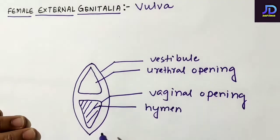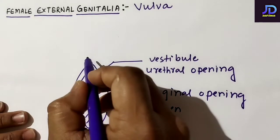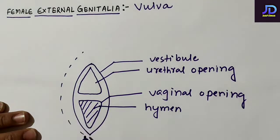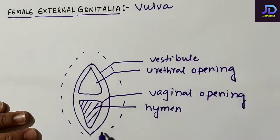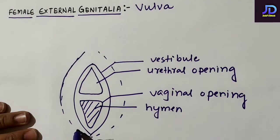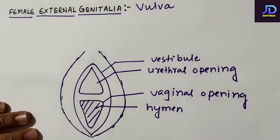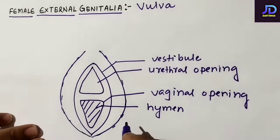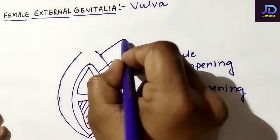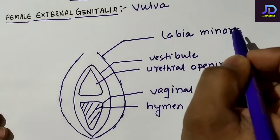This vestibular region is covered by two folds of skin. The fold which covers the vestibule is known as labia minora, also called membranous fold or labia minor.